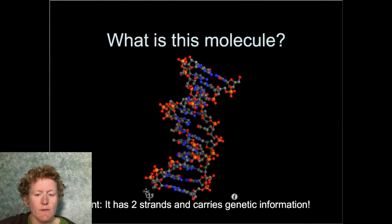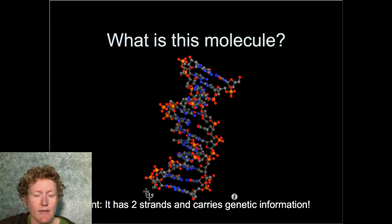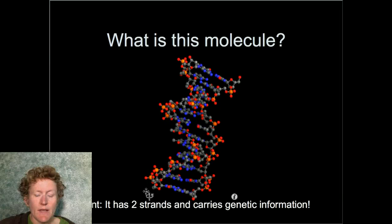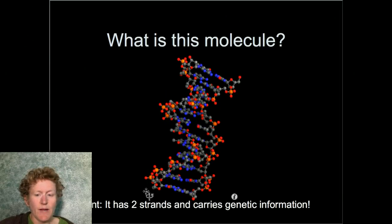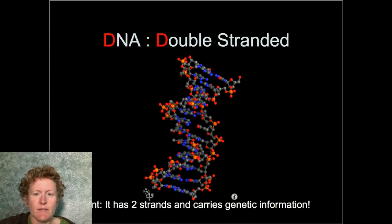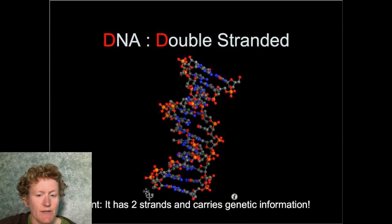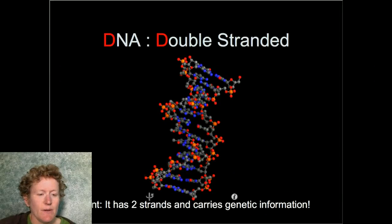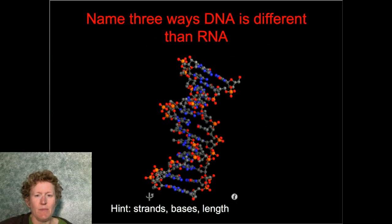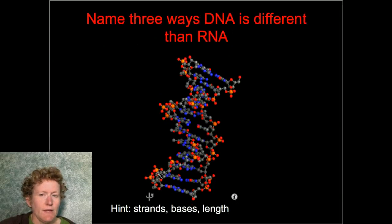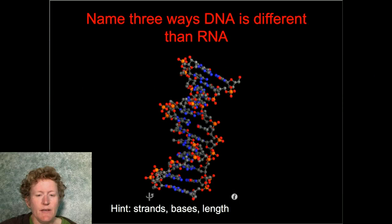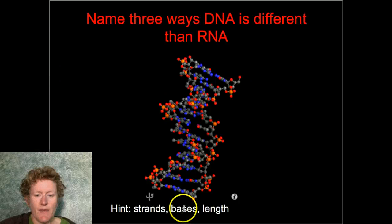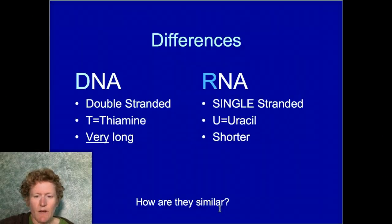This is a DNA molecule — it has two strands and carries genetic information. It's reproduced every time a cell divides. DNA is double-stranded, has two sugar-phosphate backbones with deoxyribose. There are three ways DNA differs from RNA: it has two strands, different bases (thymine instead of uracil), and it's much longer.